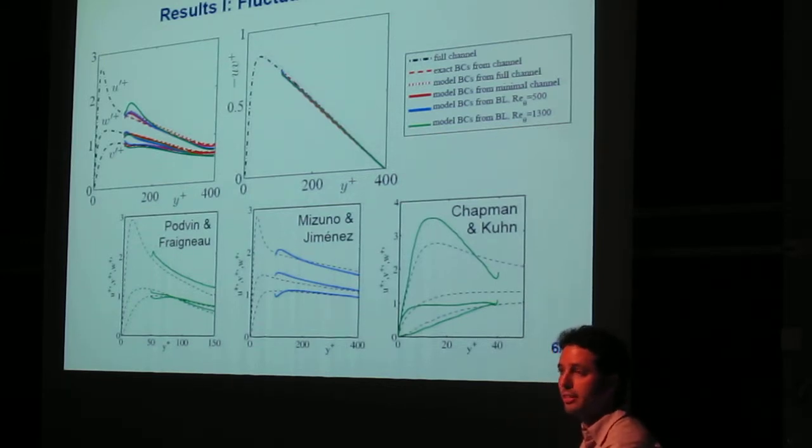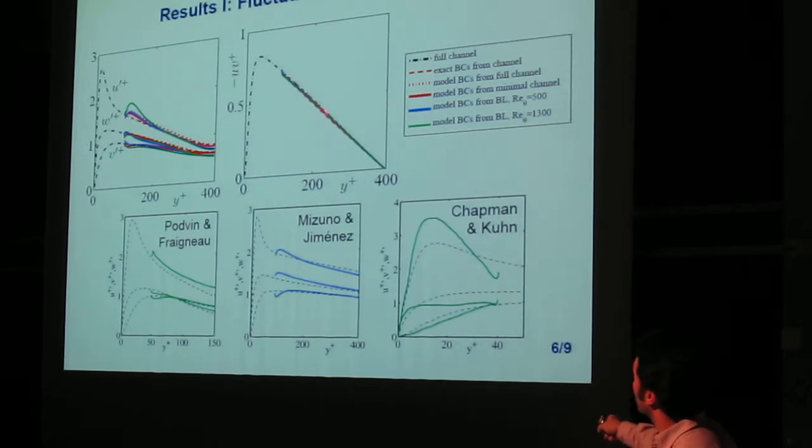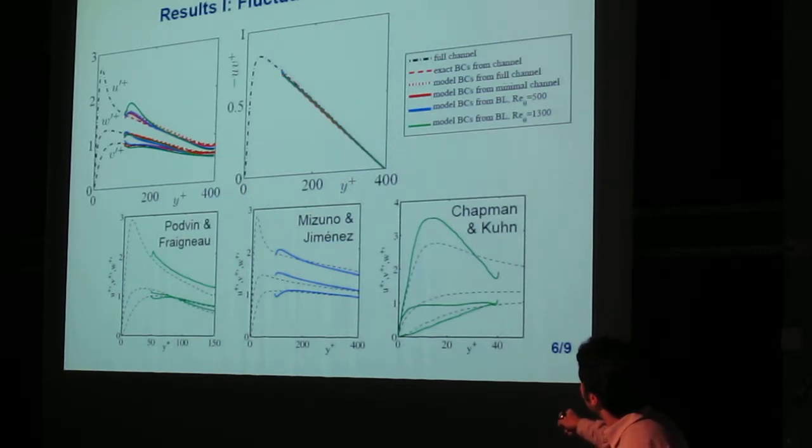In terms of turbulence, the structures that were captured in the boundary conditions are different from the ones that are generated at a wall, so that's one of the problems of this kind of model. The Reynolds stress looks to fall on top of the Reynolds stress that you would obtain in a full channel, but it has a little bit of deficit, and that has to be addressed.